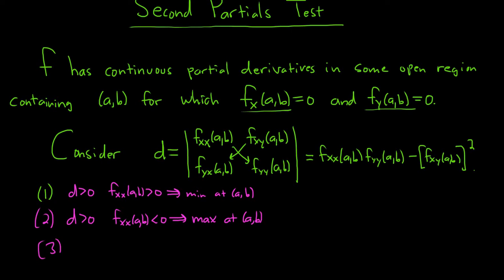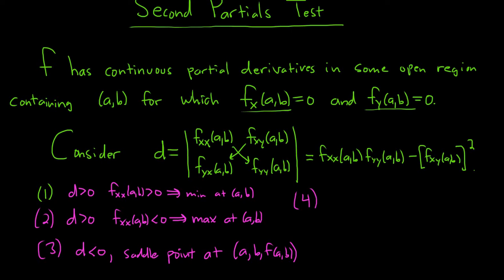Case three: if little d is less than zero, you have what's called a saddle point — there's no min or max. It looks like a horse's saddle in 3D. Saddle point at (a, b, f(a,b)), no max nor min. Case four: if d equals zero, there is no information.